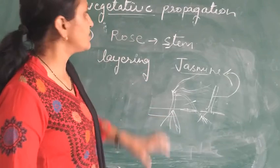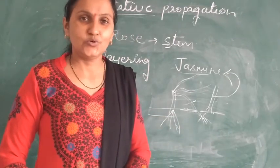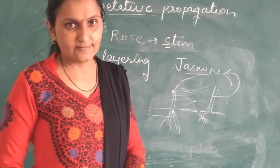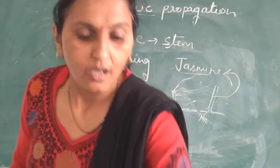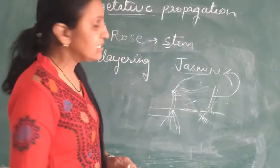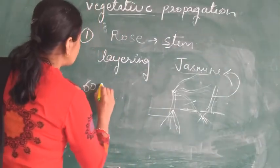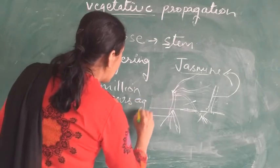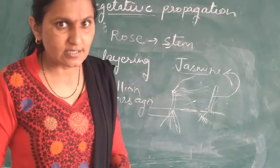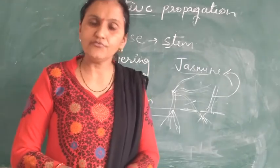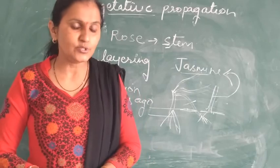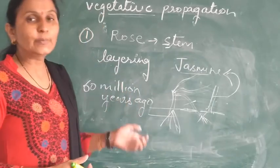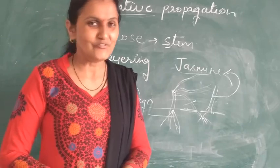So we can create a new plant in this way. Today's topic ends here and I will tell you about the next topic next time. Thank you students for watching my videos. Today's question is: which species disappeared on Earth 60 million years ago? Give your answer in the comment box.